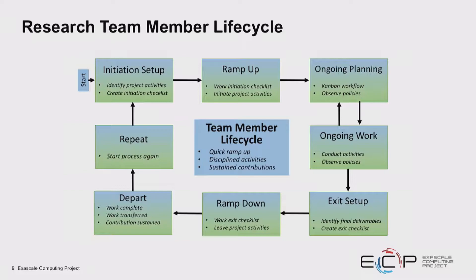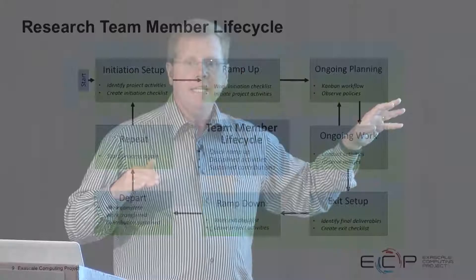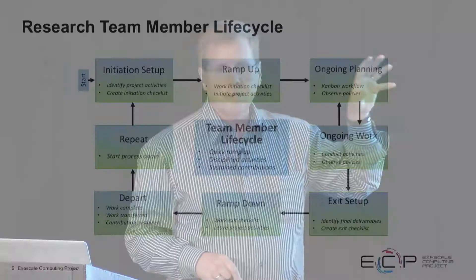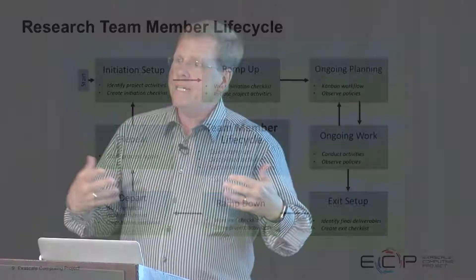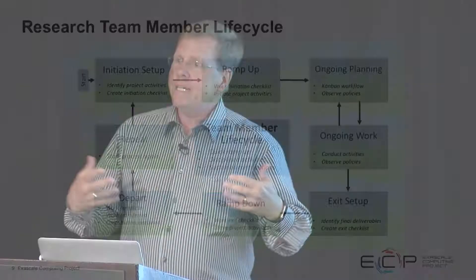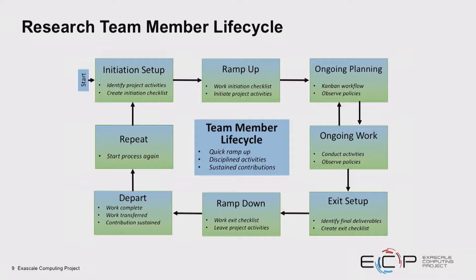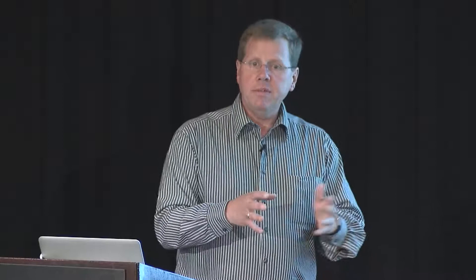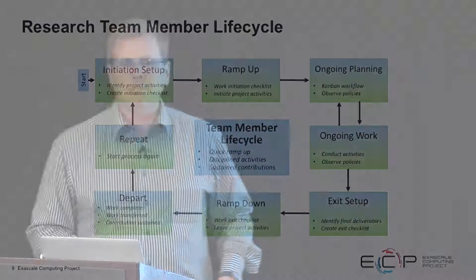After the ramp-up, you work through the initiation list — you check the box as you finish each activity, make progress, and initiate your project activities. In ongoing planning, we're going to use a Kanban workflow and create and observe some team policies — the expected conduct from you as a team member. As you approach the end of your time on a project or at that institution, we manage your departure explicitly: what do we want to make sure you get done so that when you leave and someone else comes in, we get maximum value from your work.